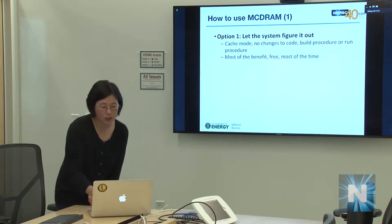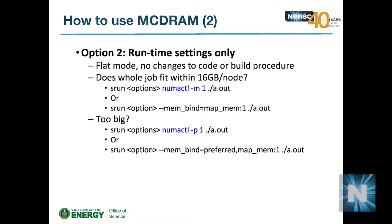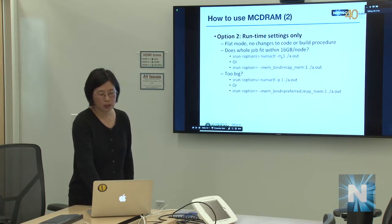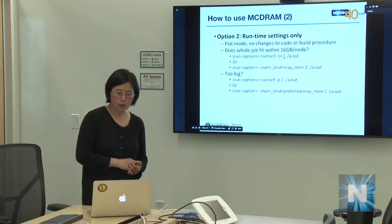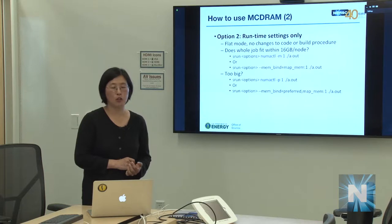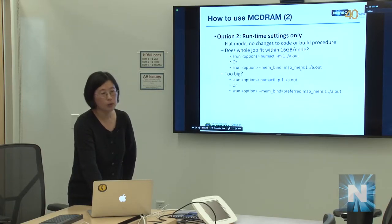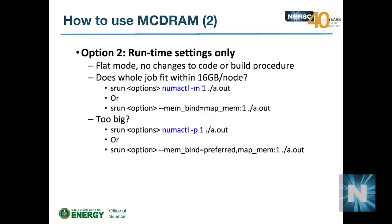In flat mode, you can explicitly direct all memory to MCDRAM. If your data fits within 16 GB, use 'numactl -m 1' or SRUN's '--mem-bind=map_mem:1' to strictly allocate to NUMA node 1 (the MCDRAM). If memory might exceed 16 GB, use the 'preferred' option ('numactl -p 1' or '--mem-bind=prefer:1') so it falls back to DDR rather than failing.